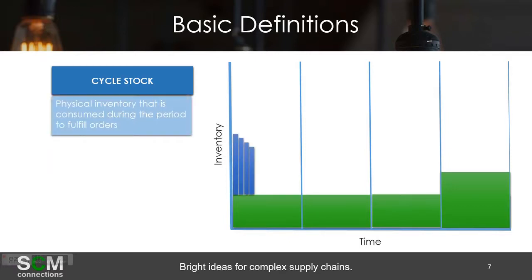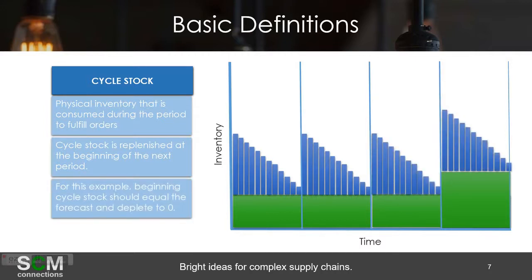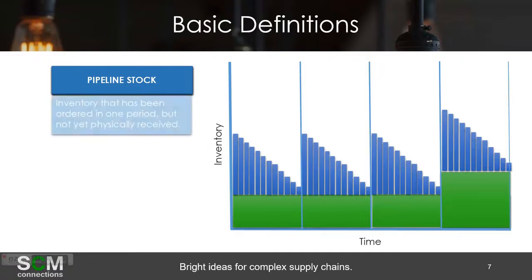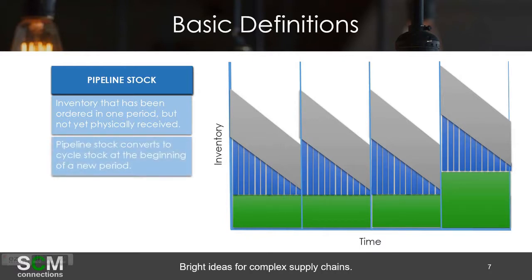Cycle stock is a concept that may be new to a lot of people, but it's essentially physical inventory that is consumed during the period to fulfill orders. Cycle stock is replenished at the beginning of the next period where the cycle just begins all over again. For this example, the beginning cycle stock should be equal to the forecast and deplete to zero by the end of the period.